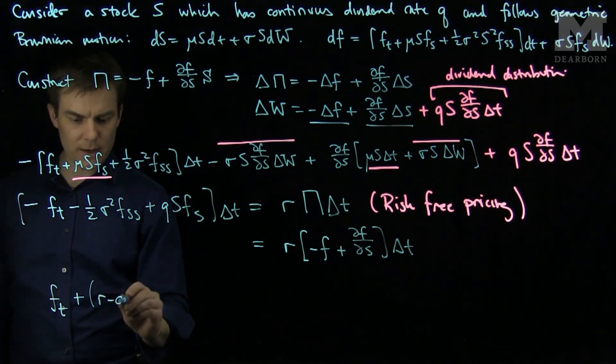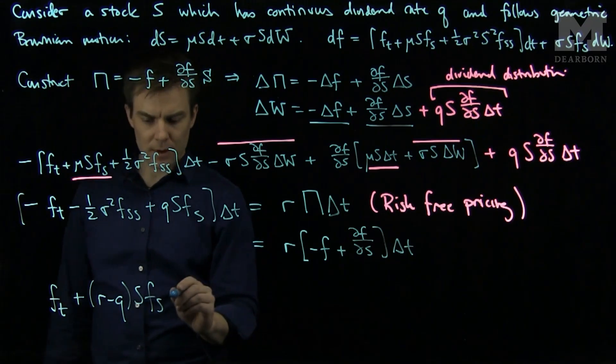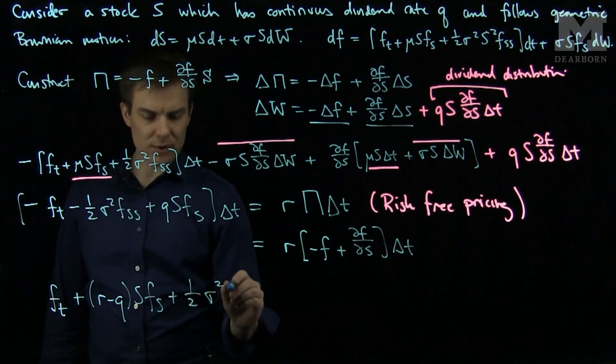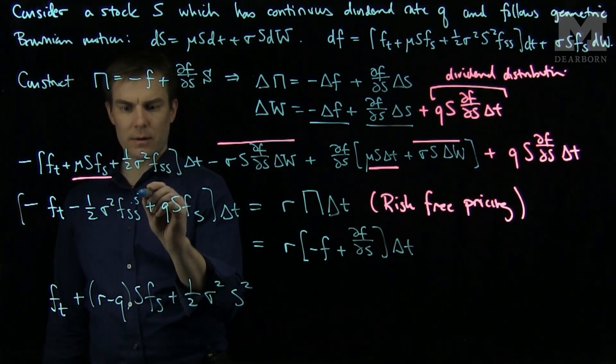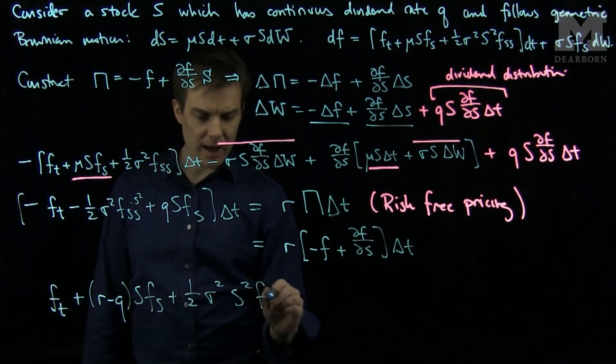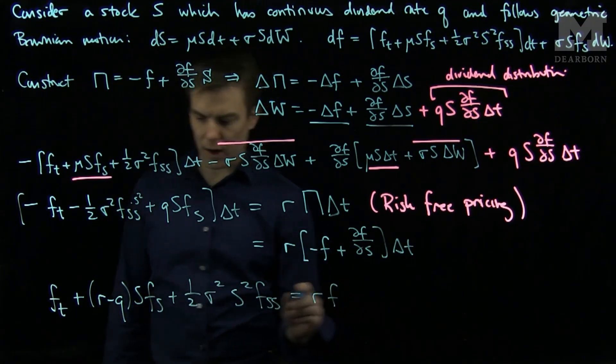I will have an r minus Q S Fs plus one half sigma squared S squared Fss is equal to rF.